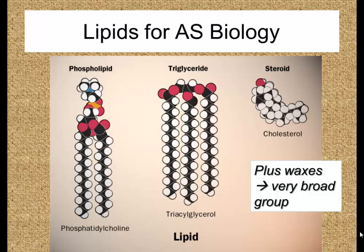Hello, it's Mr. Dare and we're talking about, in this video, lipids for AS Level Biology. There are four main types of lipid. They are the phospholipid, the triglyceride, the steroid and waxes.